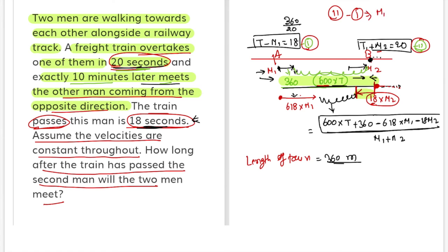M2 plus M1 is 2. So where M1 and M2, I will put the value. So 600 into T...